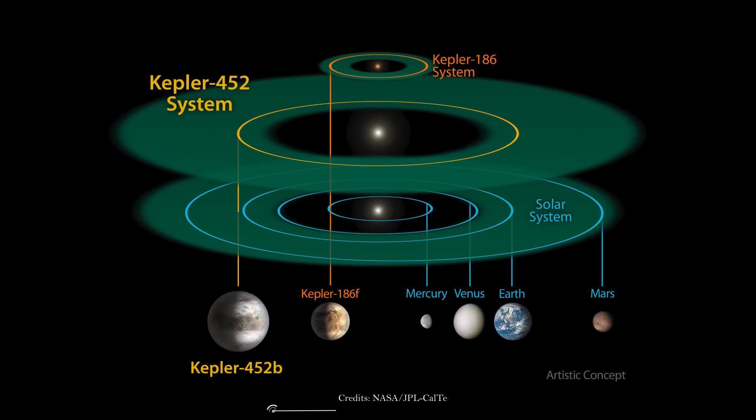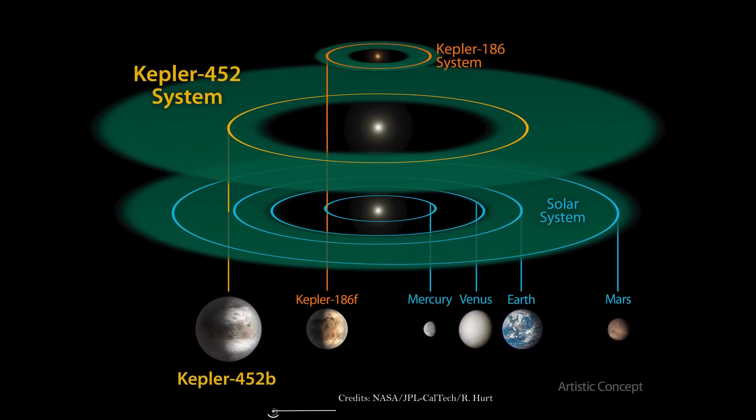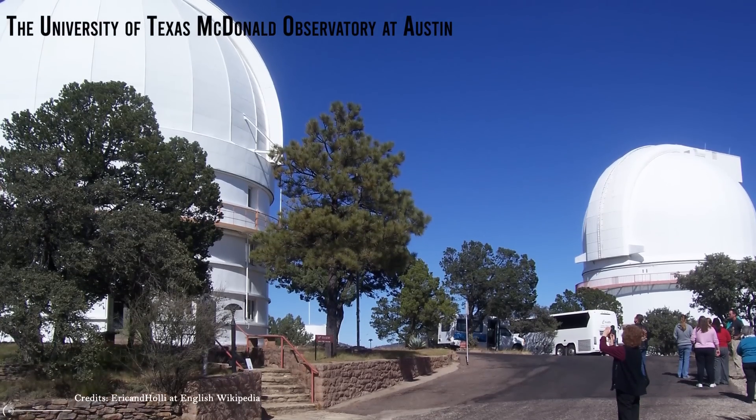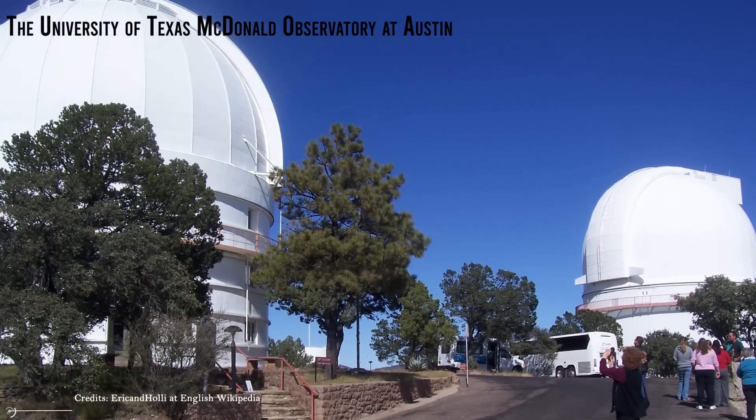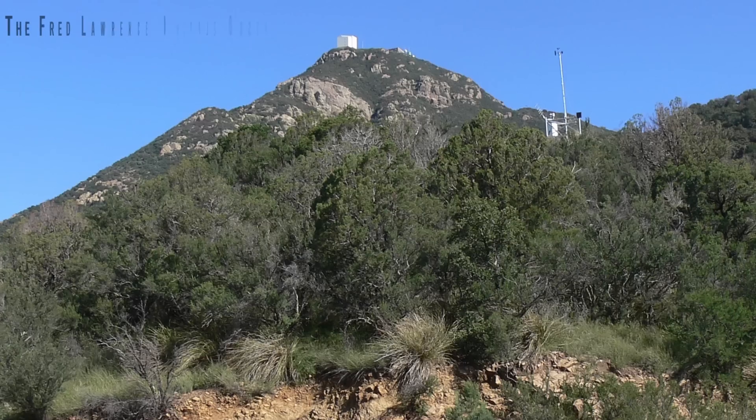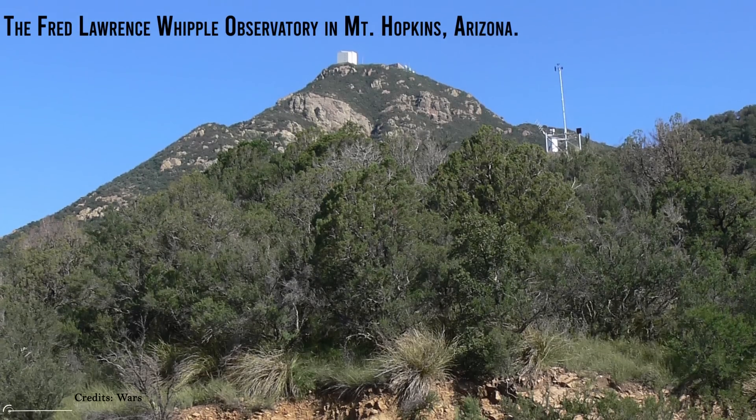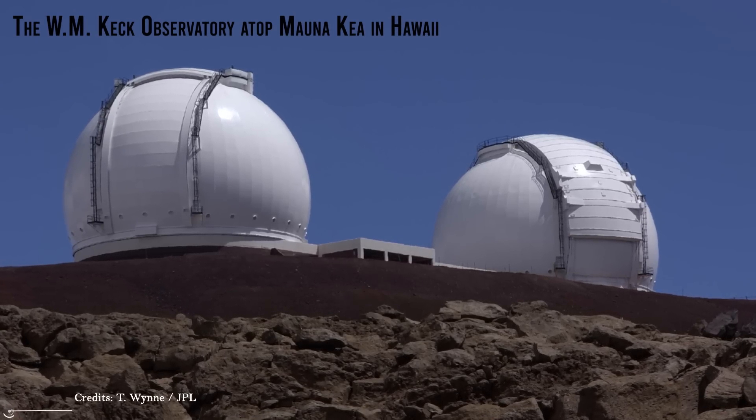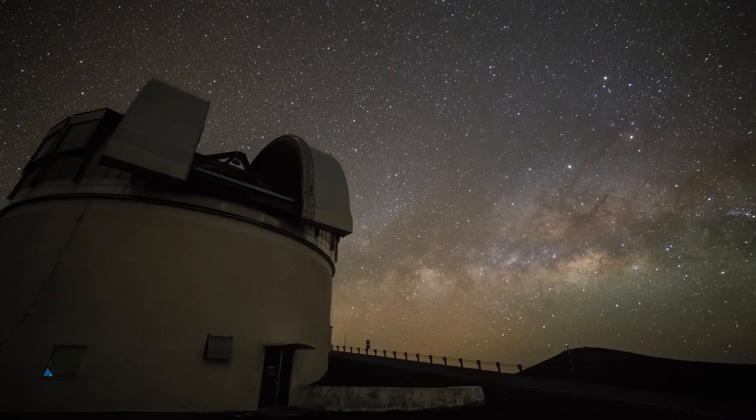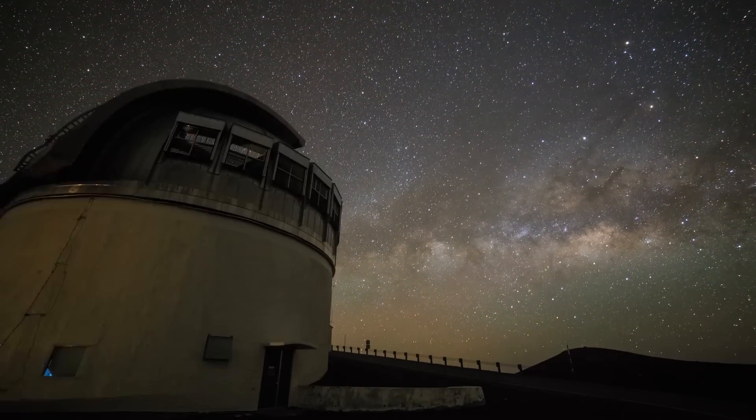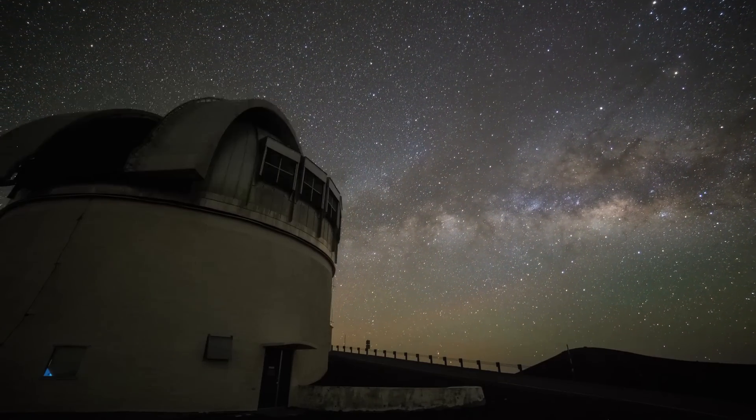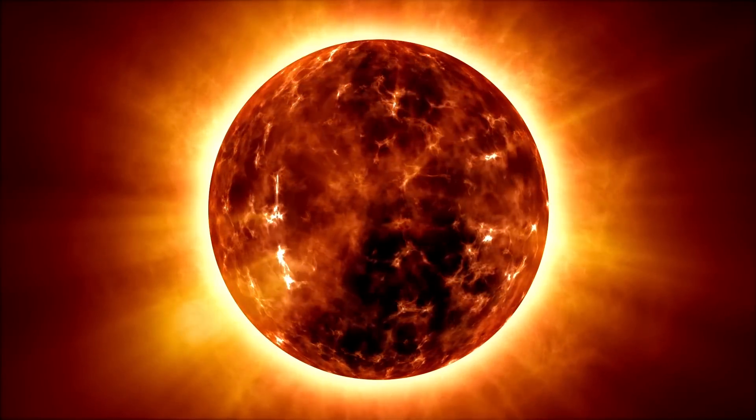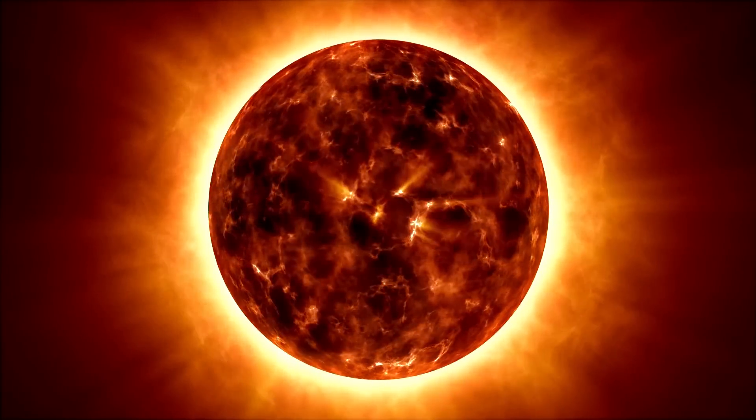To help confirm the finding and better determine the properties of the Kepler-452 system, the team conducted ground-based observations at the University of Texas McDonald Observatory at Austin, the Fred Lawrence Whipple Observatory in Mt. Hopkins, Arizona, and the W.M. Keck Observatory atop Mauna Kea in Hawaii. These measurements were essential for the researchers to confirm the planetary nature of Kepler-452b, refine the size and brightness of its host star, and better determine the planet's size and orbit.